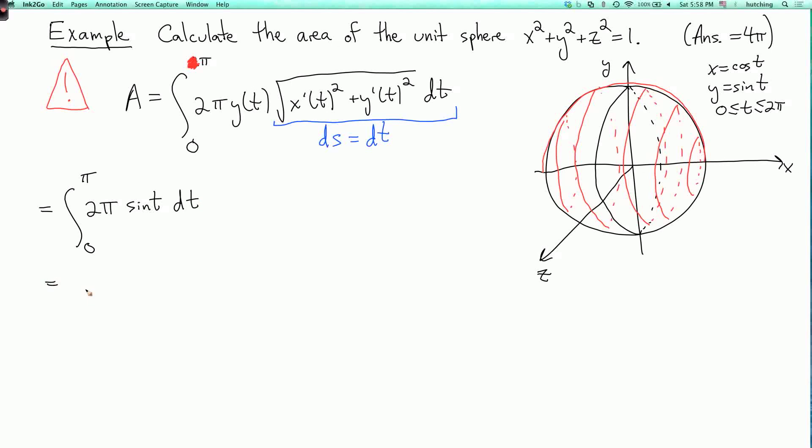So an antiderivative of this is minus two pi cosine t. I evaluate at t equals pi and t equals zero. So I get minus two pi times minus one minus one. And putting that all together, it's four pi. So it worked. And now you can use this technique to calculate the areas of some more interesting surfaces of revolution.